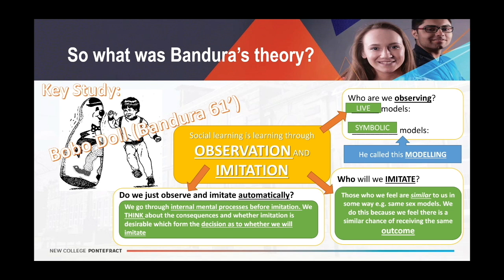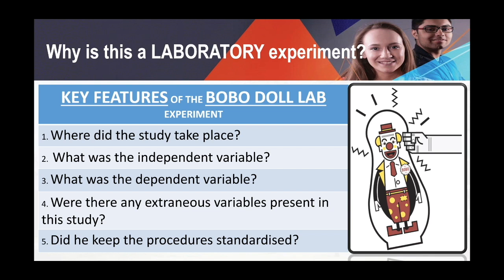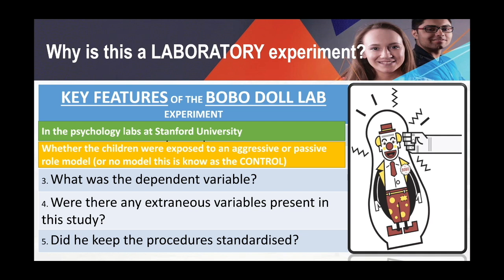Why is the Bobo Doll study classed as a classic laboratory experiment? If we answer those five questions in relation to the Bobo Doll study, we will see why it is most definitely a lab experiment. Where did the study take place? It took place within the psychology labs at Stanford University — controlled and artificial, as you could see in the video clip. What was the independent variable? The IV was whether or not the children were exposed to an aggressive or passive role model: some saw the adult beating up the Bobo Doll, some saw a pleasant interaction, and the control condition had no model.